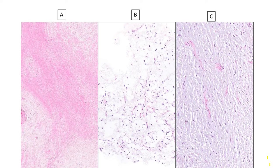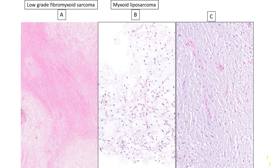Hey guys, it's your favorite soft tissue pathologist Vikram Deshpande, here to quickly go over these three soft tissue lesions. The first was a low-grade fibromyxoid sarcoma, the second is a myxoid liposarcoma, and the third is a myxofibrosarcoma.